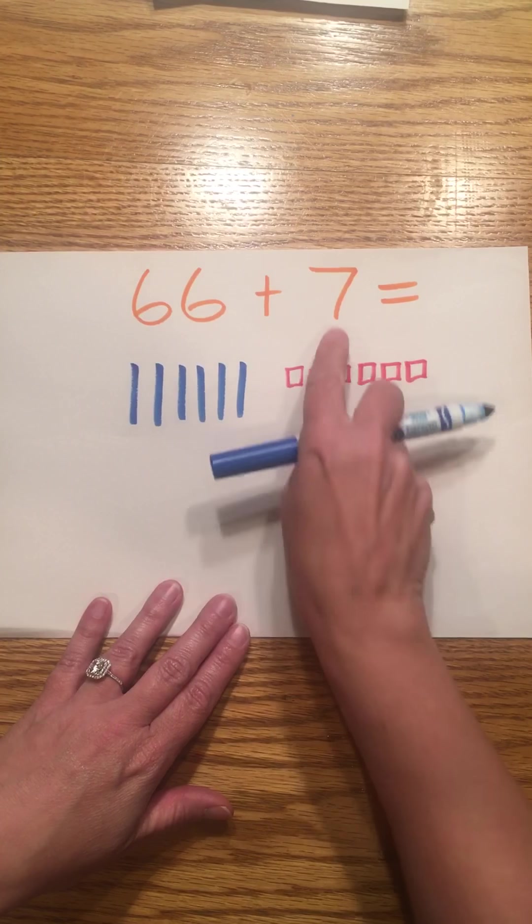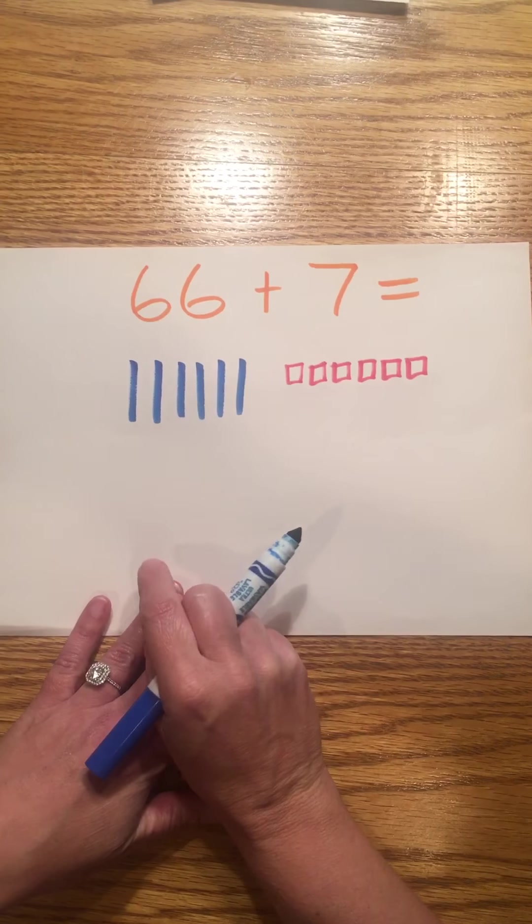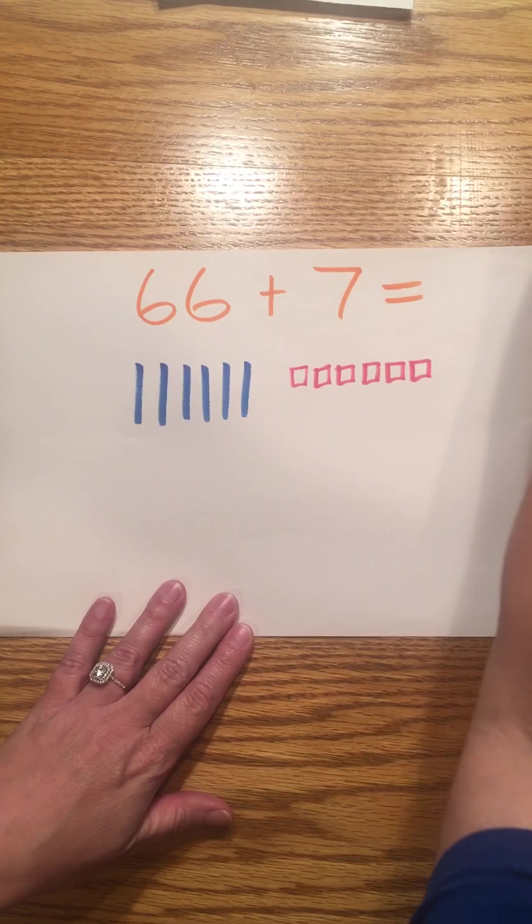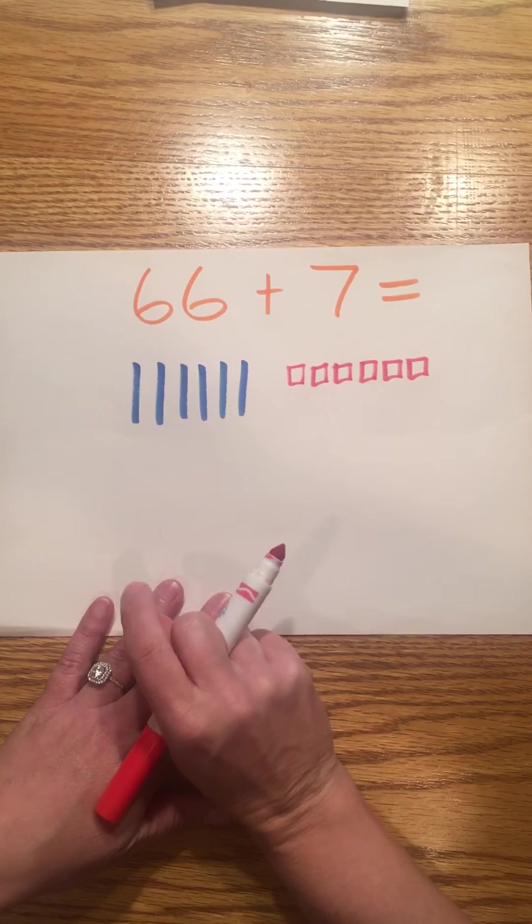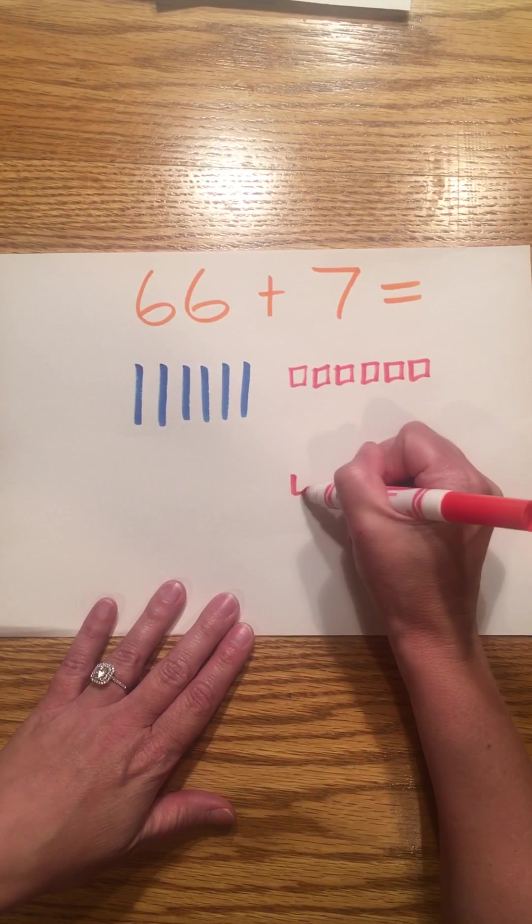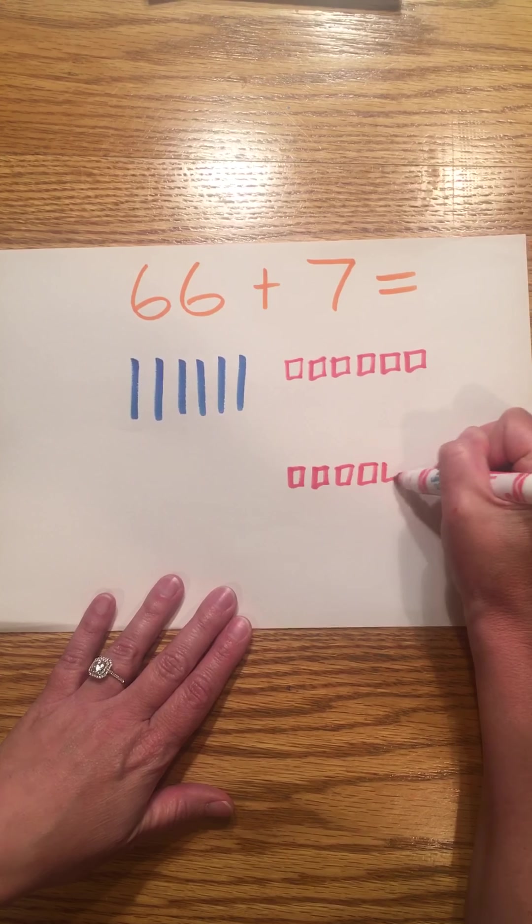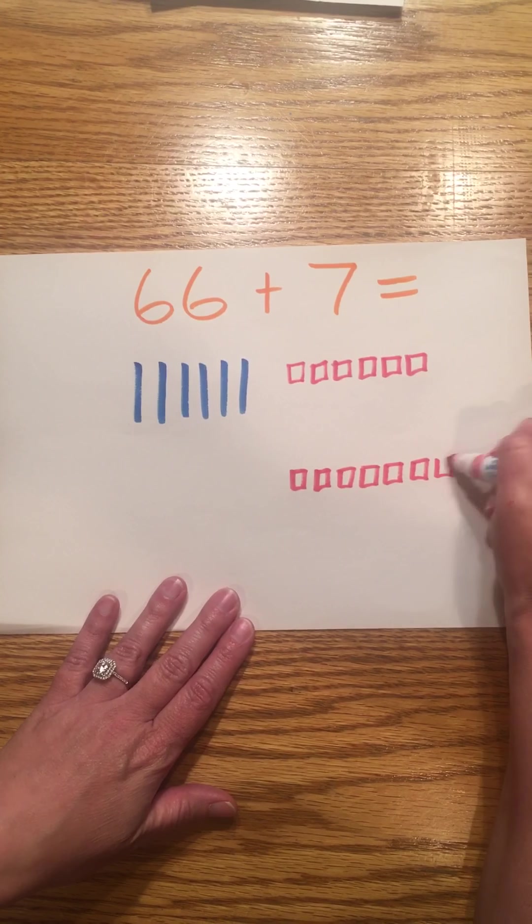We're adding seven. Seven does not have any tens, so I will not draw any tens, and it has seven ones. I'm using blue for my tens, red for my ones. So seven ones. One, two, three, four, five, six, seven.